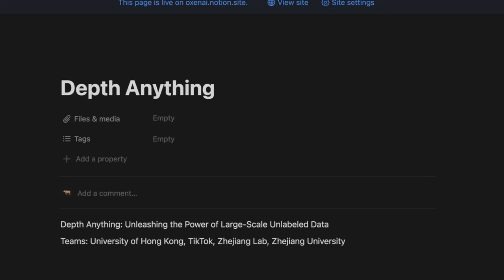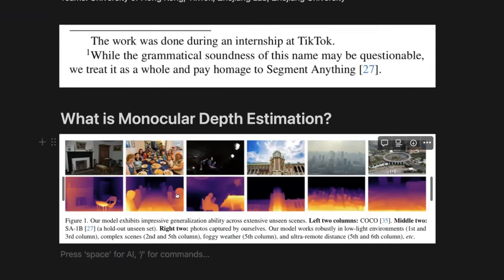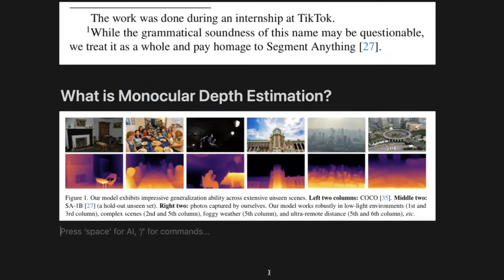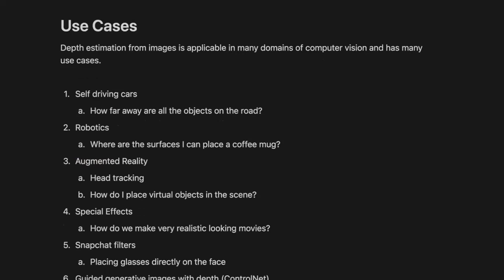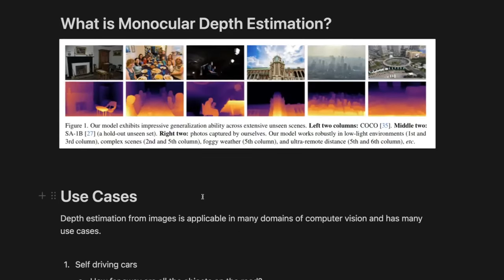What's really cool about this paper is they are able to go from a single RGB image to a depth map of the scene. They call this monocular depth estimation. It has a lot of different interesting use cases. If you're not from the computer vision world, this is just to give you a sense of the wide variety of things you could apply this technology to.